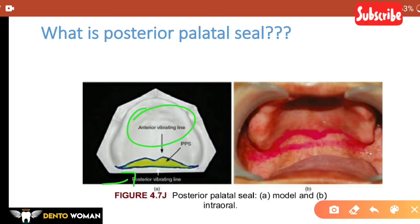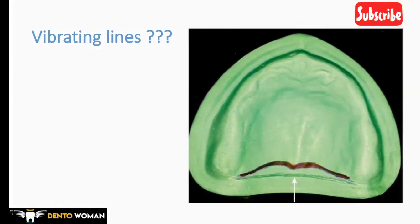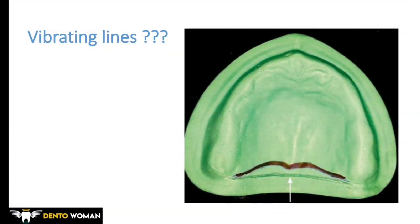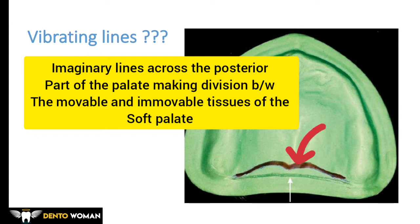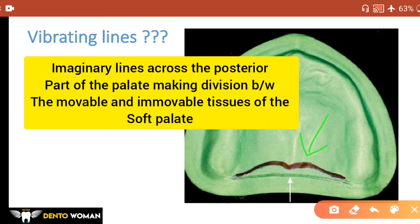Vibrating lines are imaginary lines across the posterior part of the palate marking the division between the movable and immovable tissues of the soft palate. The anterior vibrating line is always on the soft palate, and it is created due to the projection of the posterior nasal spine.